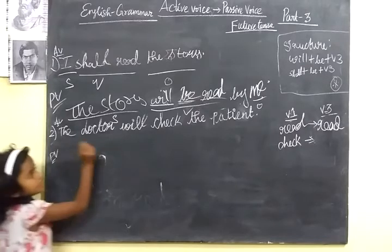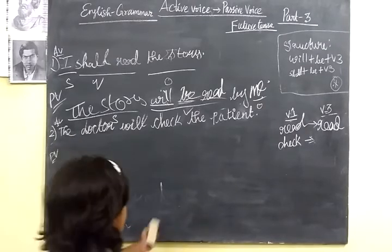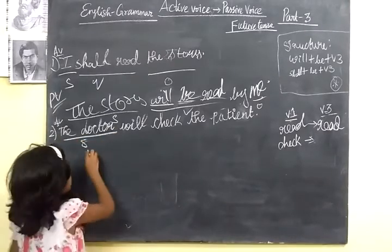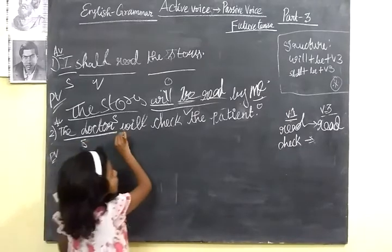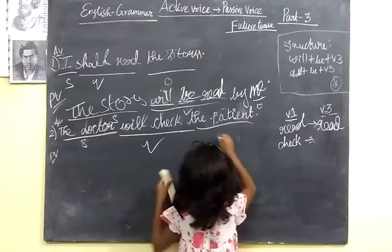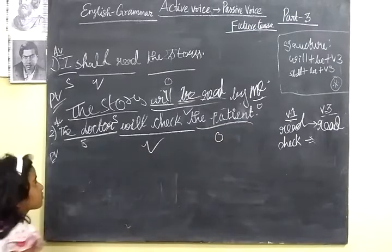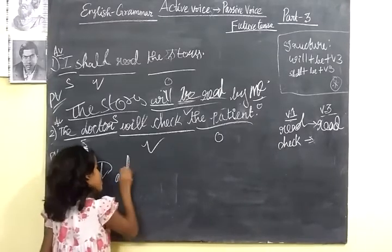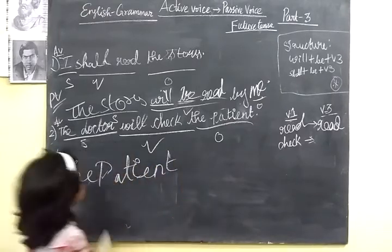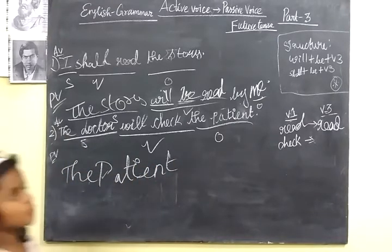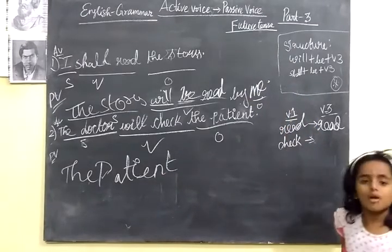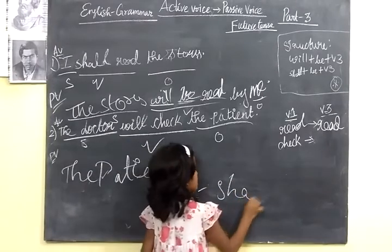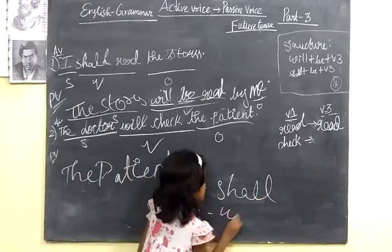Now let's go to the next sentence: 'The doctor will check the patient.' In this, 'the doctor' is the subject, 'will check' is the verb, and 'the patient' is the object. For first person, we use 'shall'; for third person, we use 'will'.